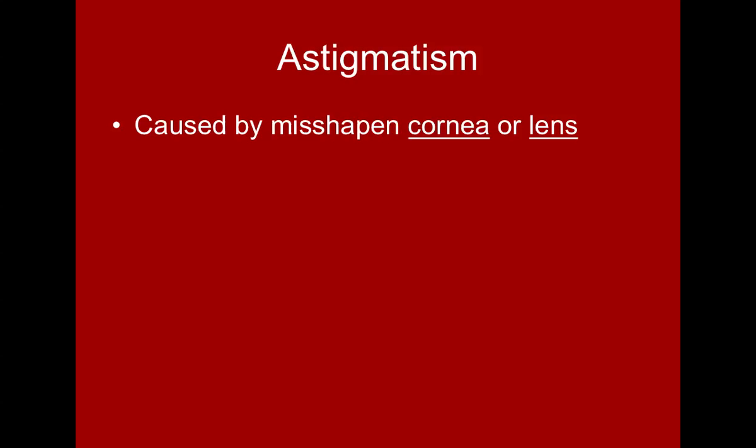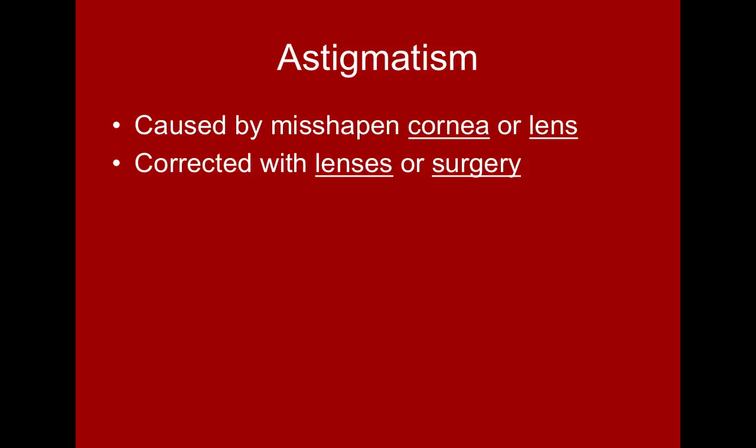Astigmatism is caused by a misshapen cornea or lens and can be corrected with lenses or surgery. This is a different condition from myopia and hyperopia — you can have myopia or hyperopia and have astigmatism or not. In fact, many people have astigmatism in one eye and not the other.